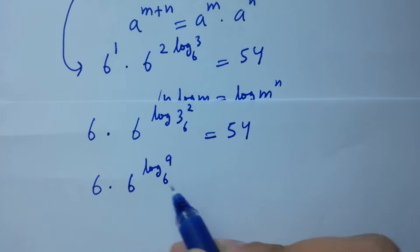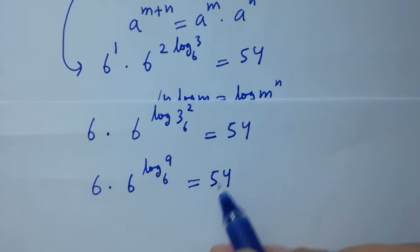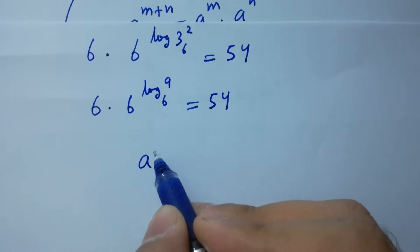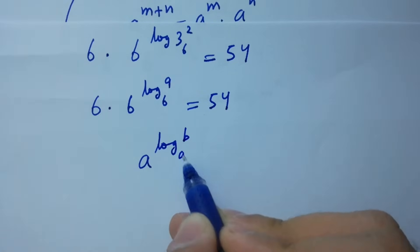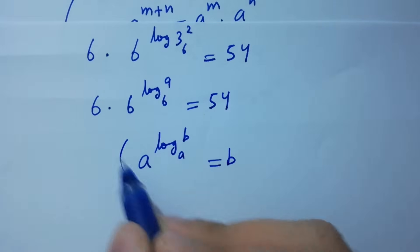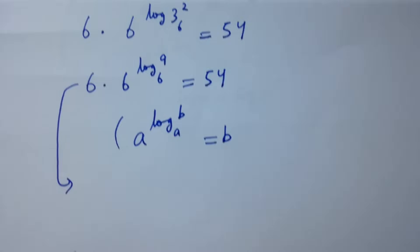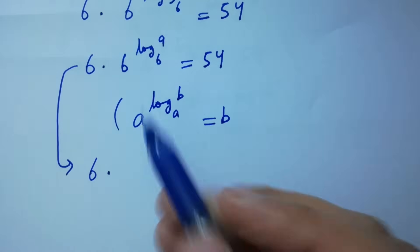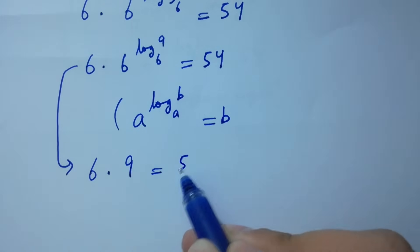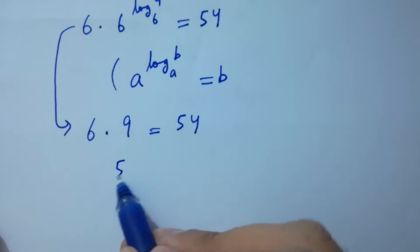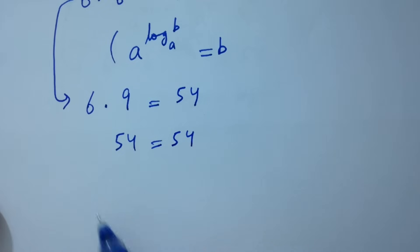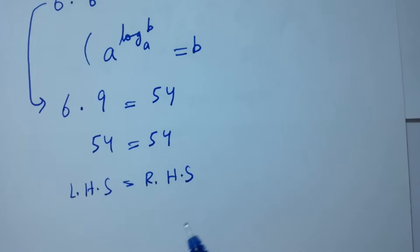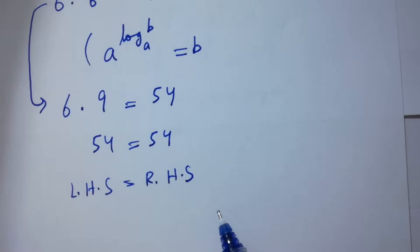Since log 3 squared equals log 9, we get 6 times 6 to the power log 9 to the base 6 equals 54. Using the rule a to the power log b to the base a equals b, we get 6 times 9 equals 54. And indeed 6 times 9 is 54, so left hand side equals right hand side, which shows that the value of x satisfies the equation.